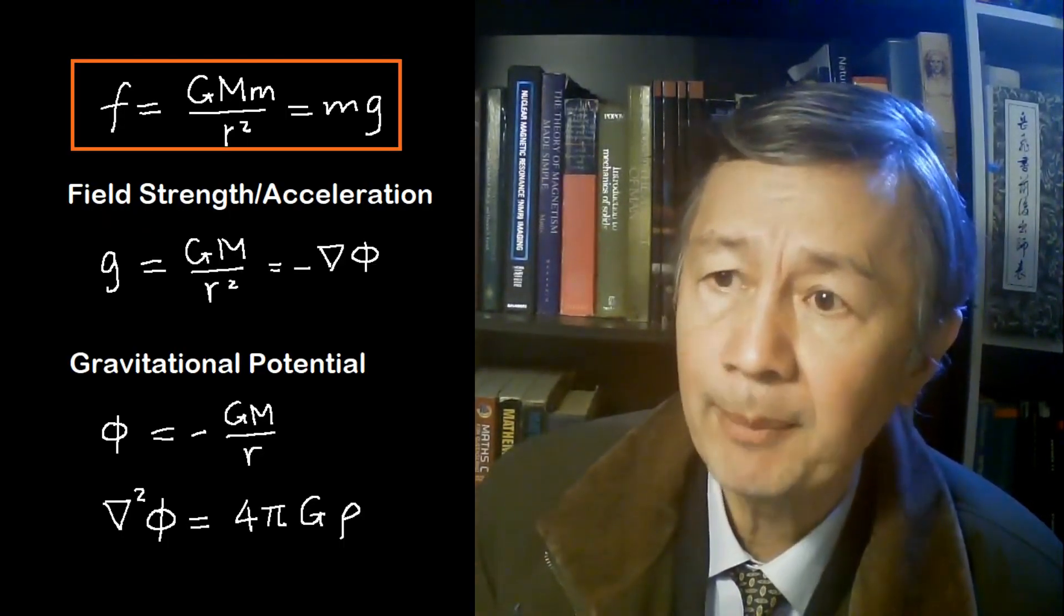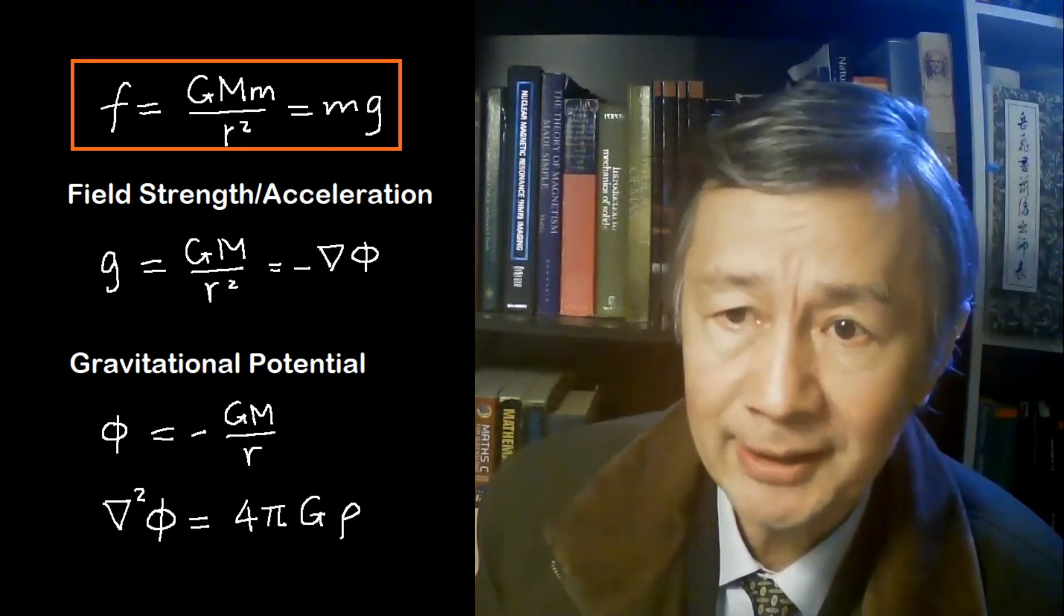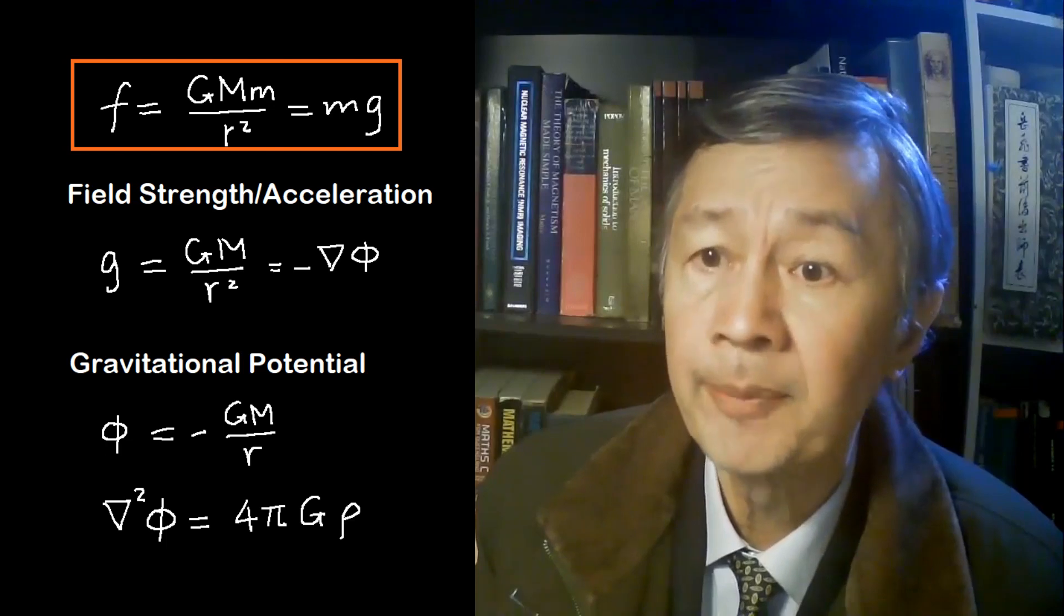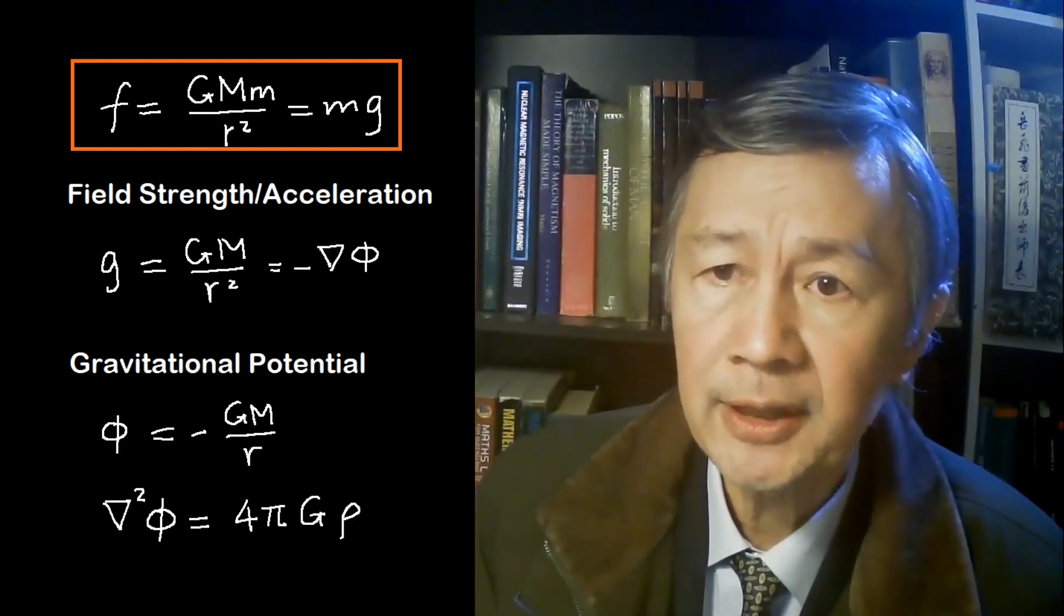Furthermore, the gravitational field strength can be written as the gradient of the scalar field called gravitational potential, denoted by phi.